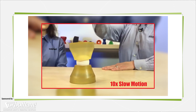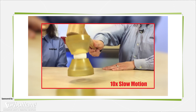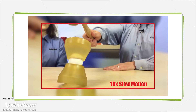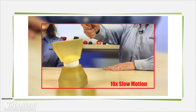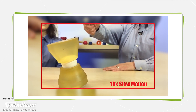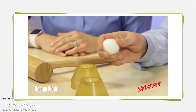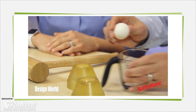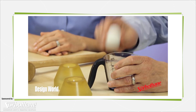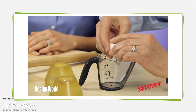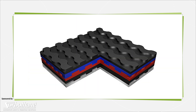Sorbathane absorbs more than half of the energies at 1 to 30,000 hertz for powerful vibration damping, shedding the energy as heat through hysteresis and directing remaining energy perpendicularly 90 degrees out of phase from the vibration or shock source.